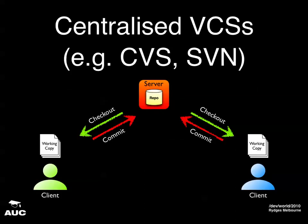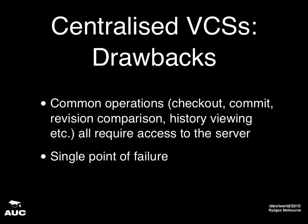What does distributed mean? We'll compare it to what centralized version control systems look like. In CVS or Subversion, you have a server which has a repository on it, and clients which check out from the server and commit to the server. That has a few drawbacks: one is that your common operations have to go out over the network, so they can be very slow. The other is a single point of failure — if your server blows up, no one can collaborate until the server's back up. And if your server really blows up and you don't have a backup, all you have left are whatever anyone had checked out in working copies.